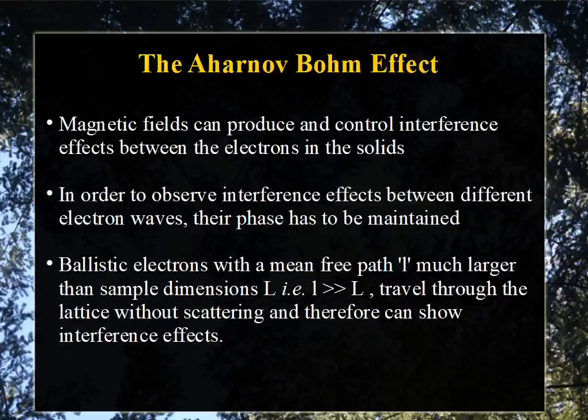In the earlier classes we discussed that we can alter the basic electrical characteristics of nanostructures by applying an external magnetic field. The magnetic fields can produce and control the interference effects between electrons in narrow layers. In order to observe these interference effects between different electron waves, their phase has to be sustained or maintained. Aharonov and Bohm observed that the total amplitude of electron waves at a certain point oscillates periodically with respect to the magnetic flux enclosed by the two paths, due to the interference effect.